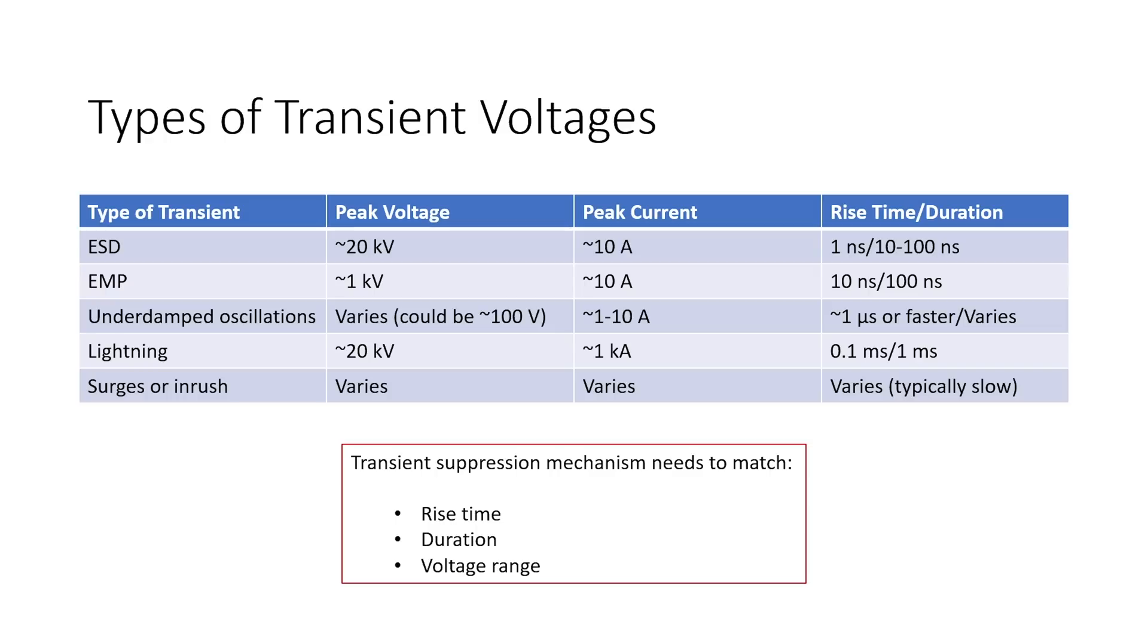As you can see from the very top of this table, ESD has a pretty fast rise time. These are about order of magnitude, so it could be slower than one nanosecond or faster, but in general it's roughly order of magnitude of a nanosecond rise time. Then you have EMP, you have underdamped oscillations like a transient that's excited during switching action. Then you have lightning, and surges or power inrush, and those can vary pretty greatly. The peak voltage, peak current, and the rise time and duration can all vary pretty greatly.